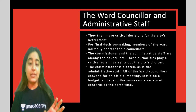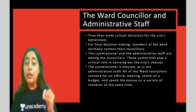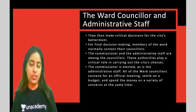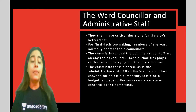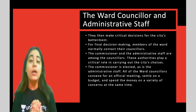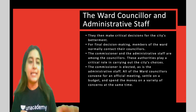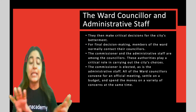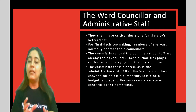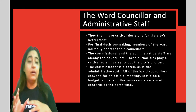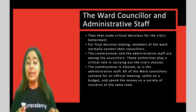All ward councillors convene for an official meeting where they settle on a budget and decide how to spend the money on a variety of concerns. They decide on a budget for the city — whether for the year, the month, or a 6-month period — and allocate how much money will go to each sector. At a given point in time, some issues require more money, and all of this is decided in their official meeting.